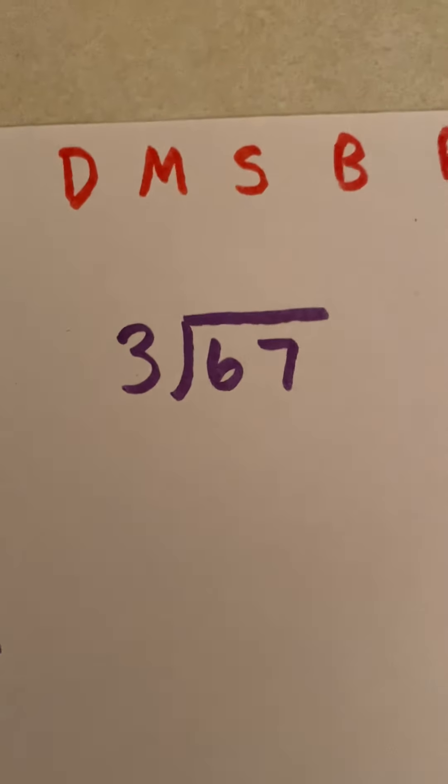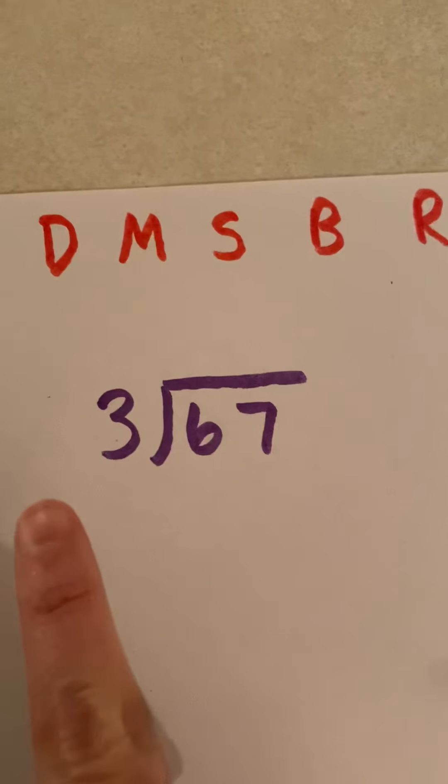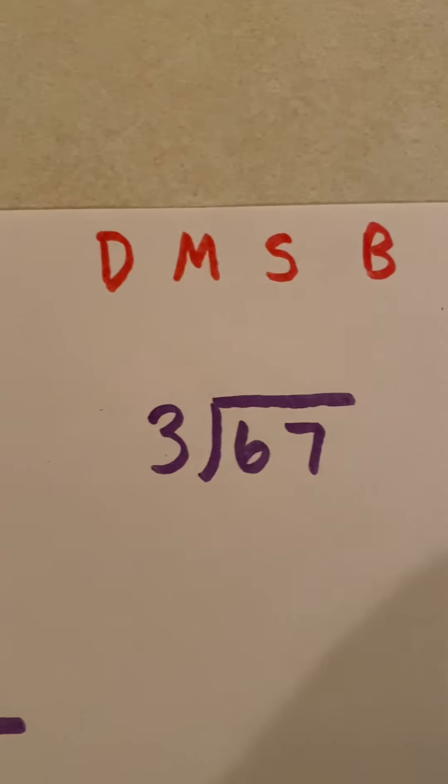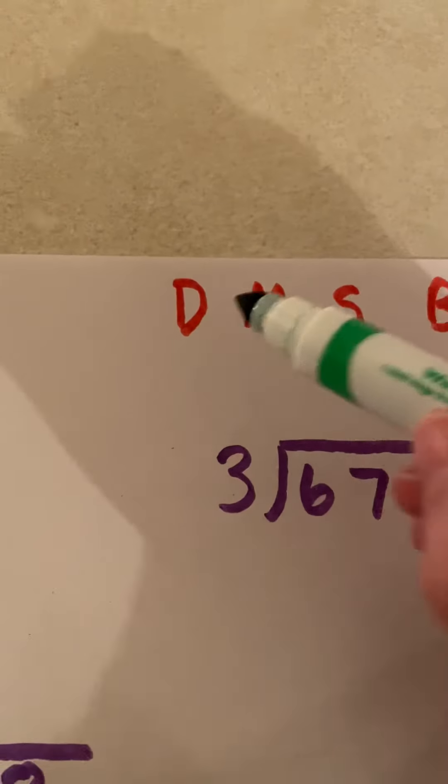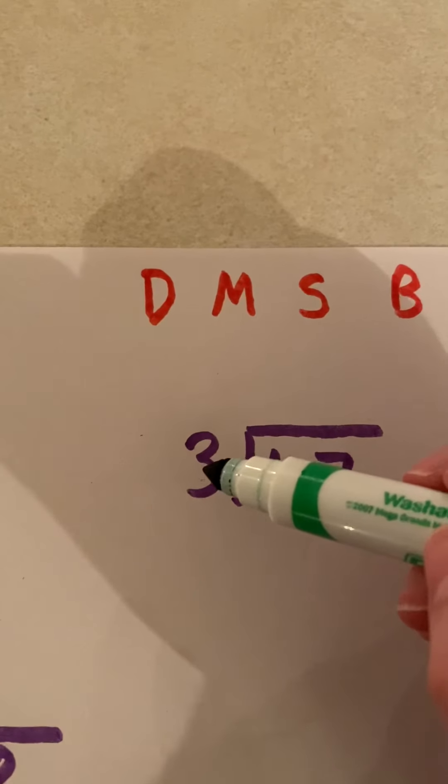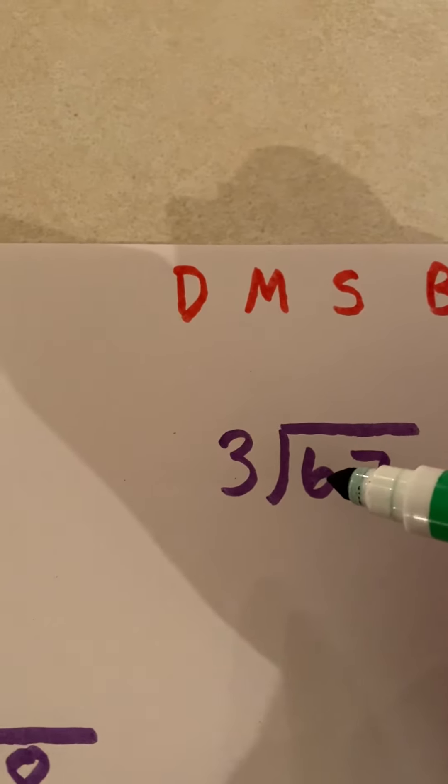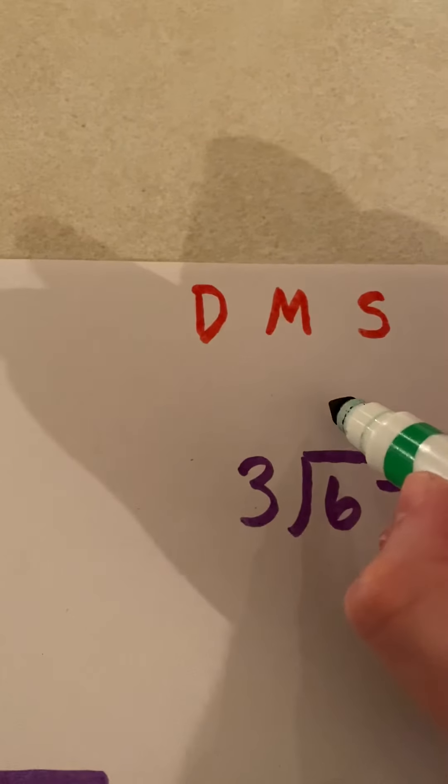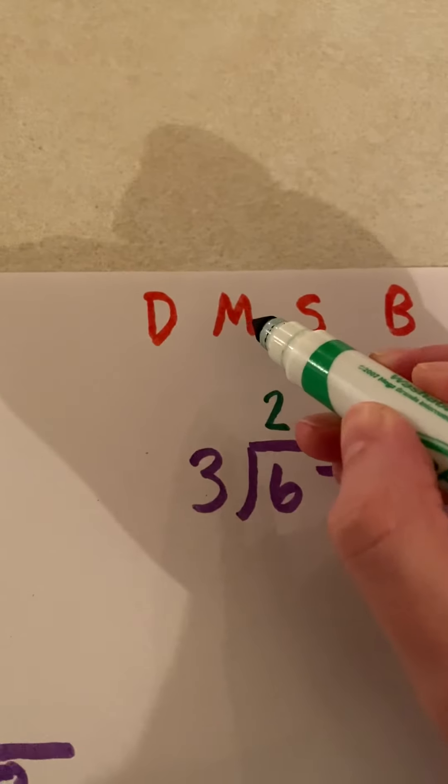Let's try a problem together. Let's try 67 divided by 3. So, I have to start with dividing, and I have to think, how many times can I fit 3 into 6? Well, I know that 3 times 2 equals 6, right? So I'm ready to multiply.